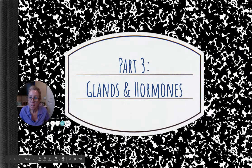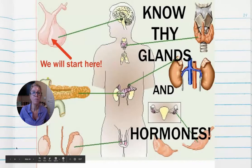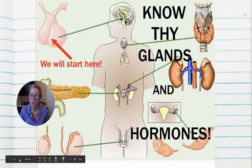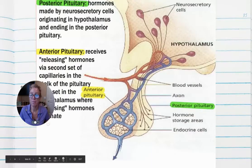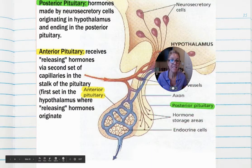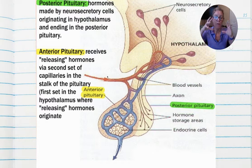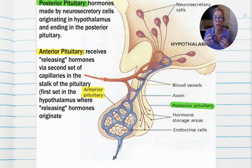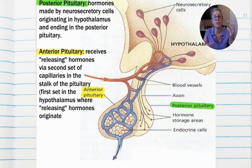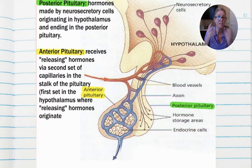The first topic I want to talk about is the hallmark example of how the hypothalamus, which is 100% nervous system, engages with your pituitary gland, and how those two systems — the nervous system and the endocrine system — work together to maintain homeostasis in your body.